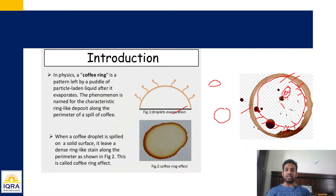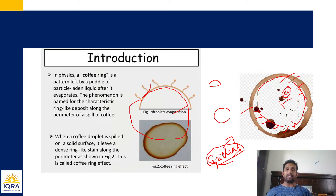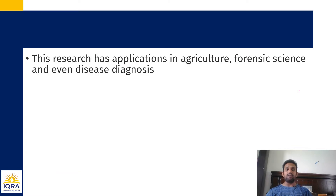Scientists yeh study kar rahe hain ki aisa kyun hota hai. One important physics thing: yeh capillary action se hota hai. So aap yeh bhi yaad rakhiye ki coffee ring mein capillary action bhi hota hai. Droplets evaporate ho jaate hain, ek aisi ring ban jaati hai. Scientists maante hain agar yeh hum decode kar sakein ki is tarike se particles behave karte hain, future mein applications ho sakte hain agriculture mein, forensics mein, even disease diagnosis mein bhi.